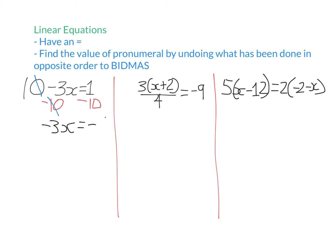Now to get x by itself, x has been multiplied by negative 3. We undo that by dividing each side by negative 3. Times negative 3 and divide negative 3 cancel each other out, leaving x equals negative 9 divided by negative 3, which is positive 3. We can verify: substituting x equals 3 gives 10 minus 9 equals 1, which is a true statement.